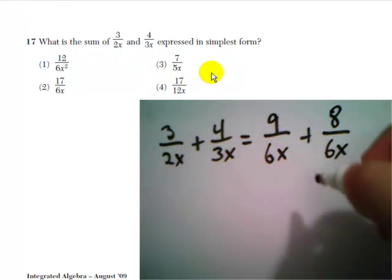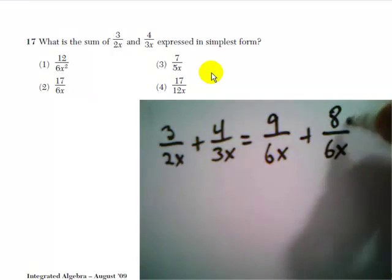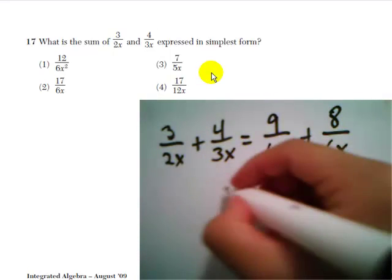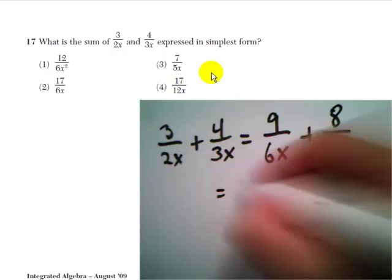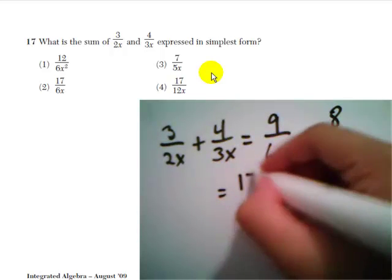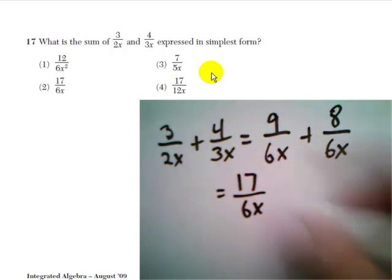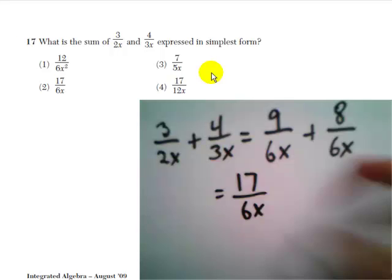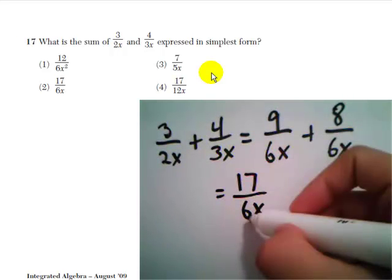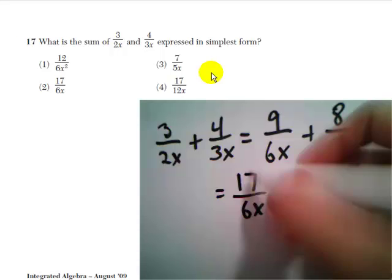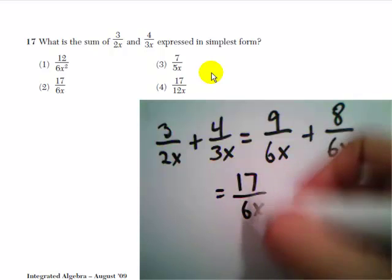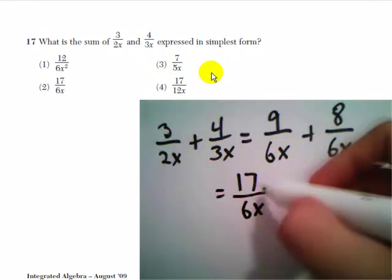Remember the rule for adding fractions: just add the numerators, keep the denominator. So 9 plus 8 gives us 17. The denominator is still 6x. 17 is prime, so there's no number that goes into both 6 and 17 — we can't reduce it.